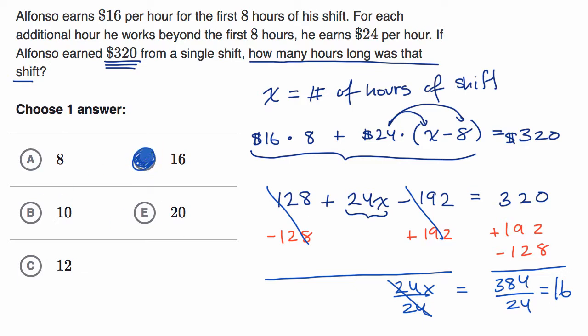Now there might have been another way to do this. You could have tried out values. You could have said, if Alfonso works eight hours, that's too little, 10 hours, and keep trying values where for the first eight hours, you do 16 times that, 16 times eight. And then after that, each incremental hour is $24 an hour. So it depends which strategy works better for you. But the algebraic way will definitely, if you do it in a logical way, it'll definitely get you to the right answer.